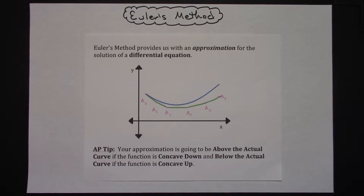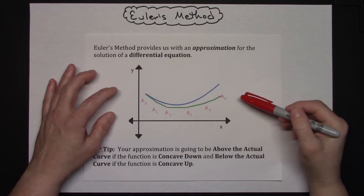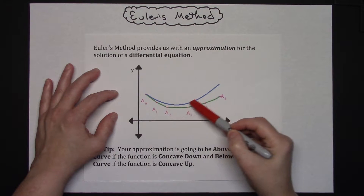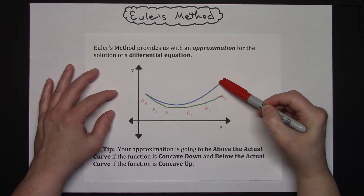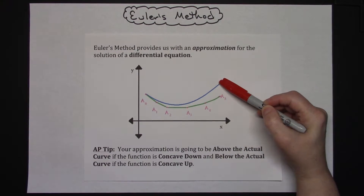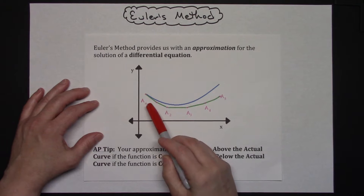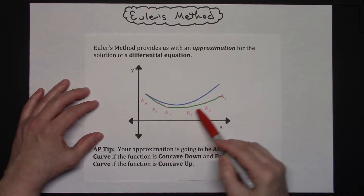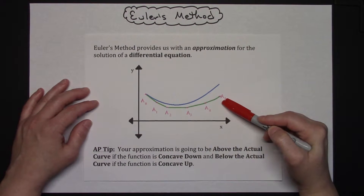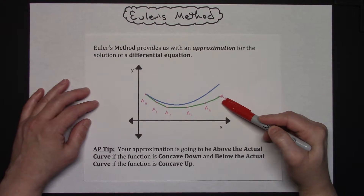Today we're going to be taking a look at Euler's method. Basically, Euler's method provides us with an approximation for the solution of a differential equation. In my picture here, the blue line would be the actual solution to a differential equation that has been solved, and the green line here, made up of various line segments, is what was generated using Euler's method — that's an approximation for it.